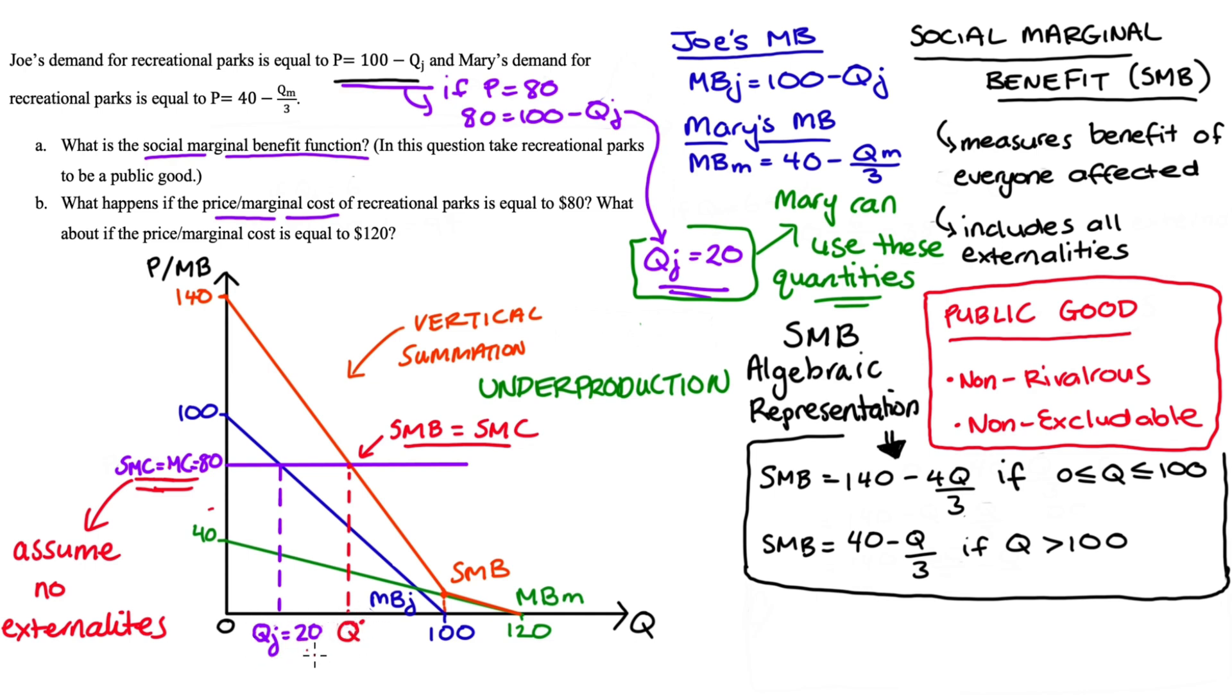Now we can actually find the numerical value for our q* by setting our social marginal benefit and our social marginal cost functions equal to one another and then solving for the quantity. Our social marginal benefit is equal to 140 minus 4q/3.